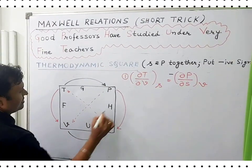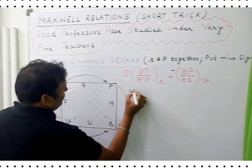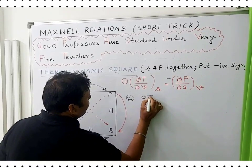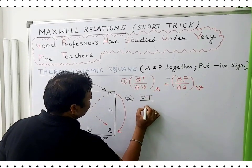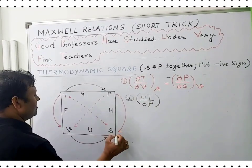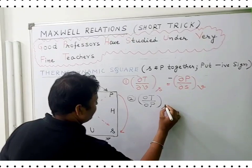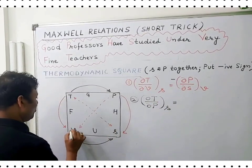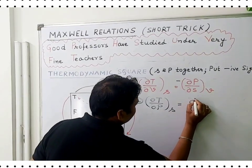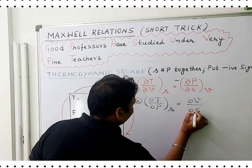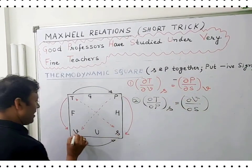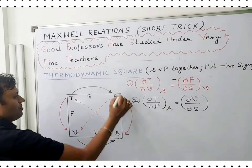The next expression — the second one — will be: del T by del P at constant S is equal to del V by del S at constant pressure.